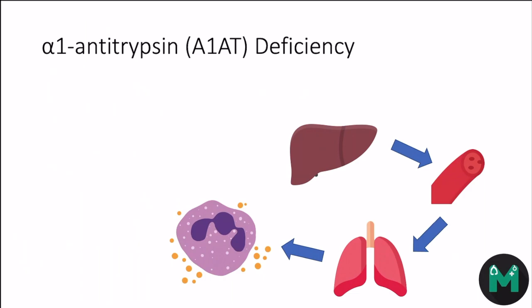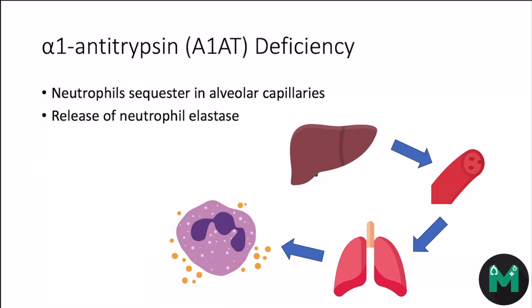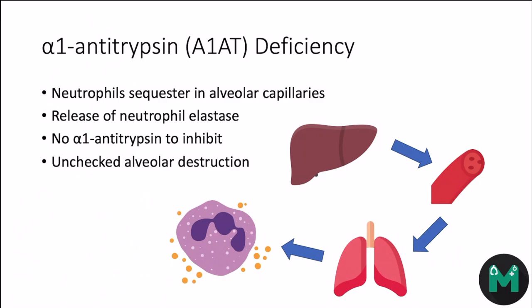Elastases would normally destroy alveolar wall connective tissue, so alpha-1 antitrypsin prevents it from doing that. In the inflammatory process, neutrophils collect together in the alveolar capillaries and release elastase. As there's no alpha-1 antitrypsin to inhibit the elastase, there's unchecked alveolar destruction.